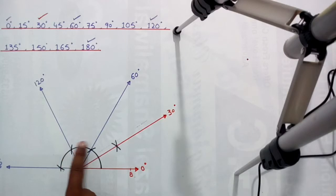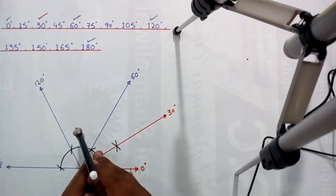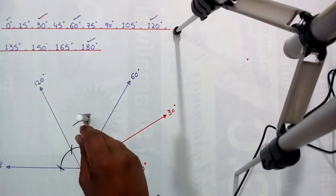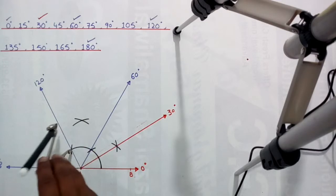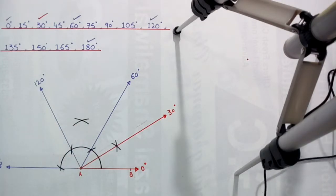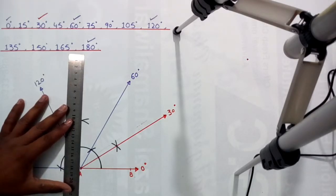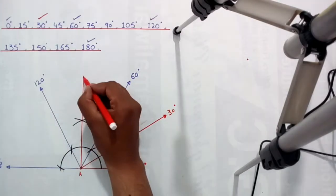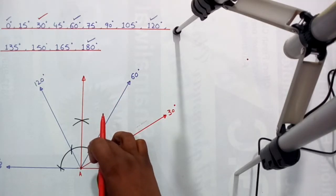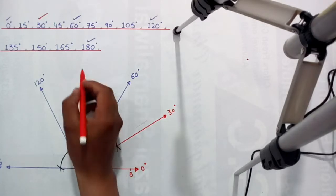Now we will divide this 60 degree angle to find 90 degrees. Open your compass to a suitable length, place it on this point and draw an arc, then place it on the next point and draw a second arc which cuts the first. Join point A with this point — 60 degrees plus 30 degrees equals 90 degrees.